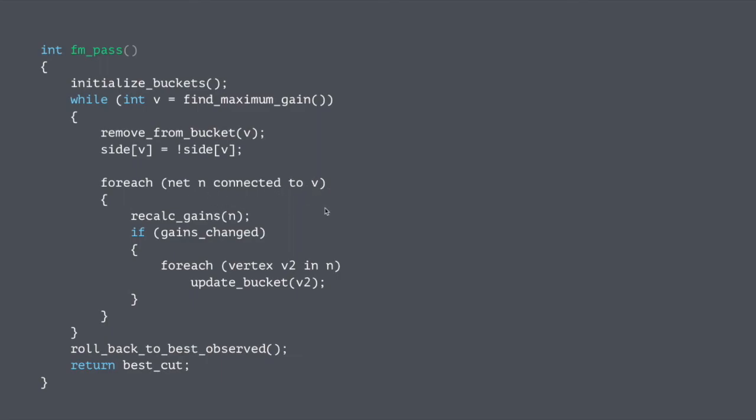And then we have to do some bookkeeping to update all the other vertices that might be connected to this vertex V that we've just moved. So we'll check the nets that are connected to V, recalculate the gains from the nets, go back through, check all the vertices that are on each of these nets, and there's some update work. It's not terrible, but it's got to be done. And if you've implemented your graph efficiently with linked lists, it should be fairly quick. Once you've moved all the vertices, then you can roll back and get back to the best observed intermediate solution. And you return that value to whoever called you.